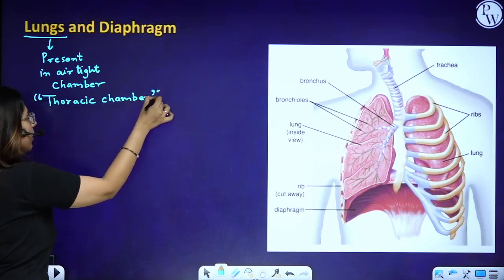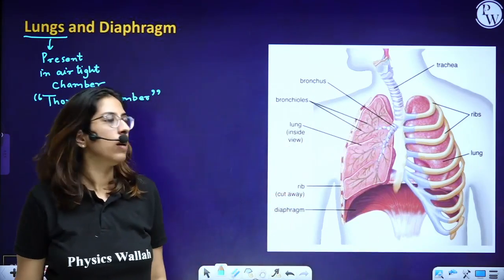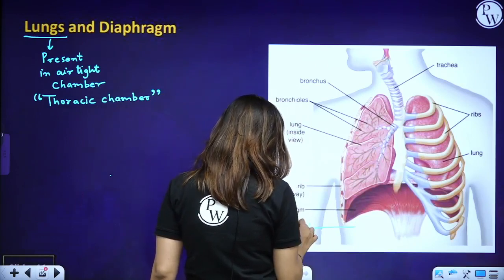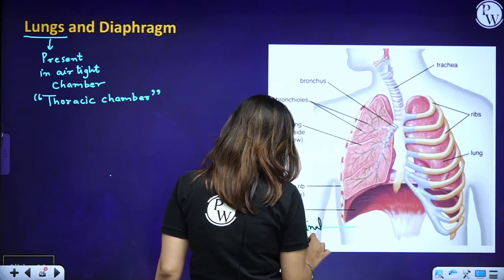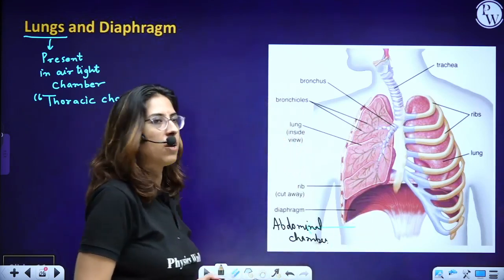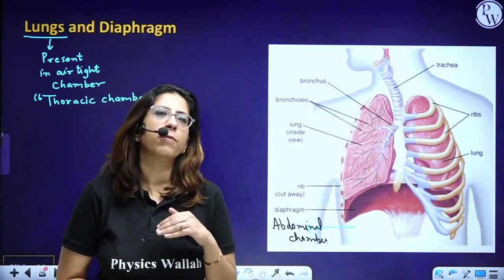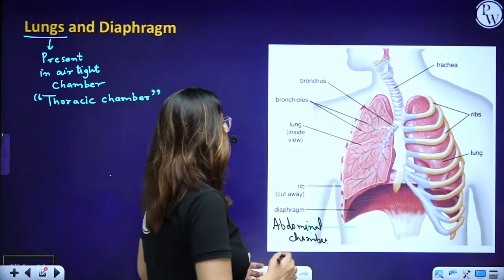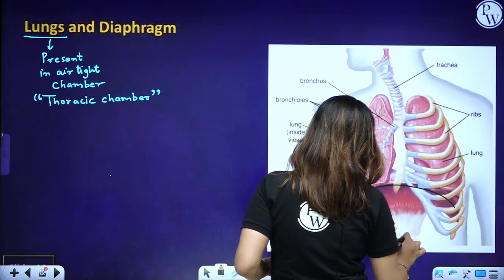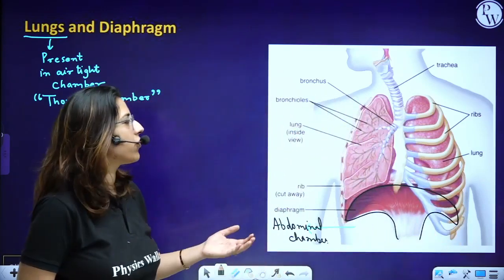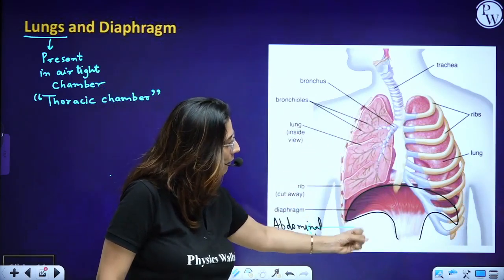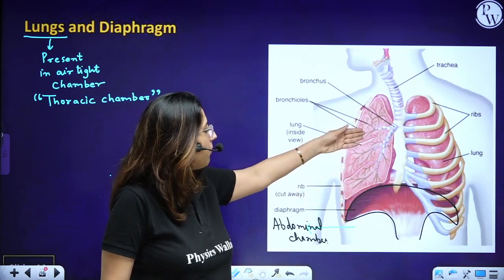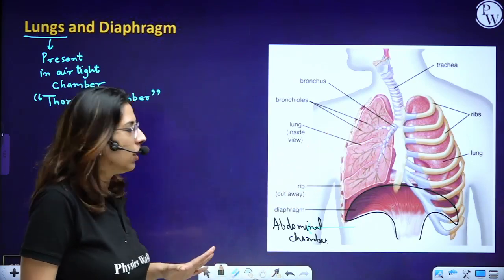Above the diaphragm is the thoracic chamber; below is the abdominal chamber. This chamber is completely surrounded: on the ventral side is the sternum, on the dorsal side is the vertebral column, on the lateral sides are the ribs, and below is the diaphragm. Because of the diaphragm, we have this airtight structure.